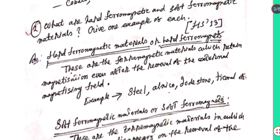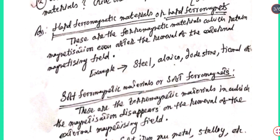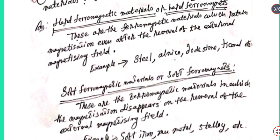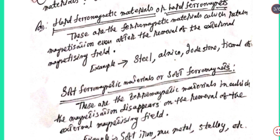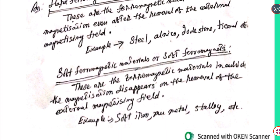The second type is soft ferromagnetic materials or soft ferromagnets. These are ferromagnetic materials in which the magnetization disappears on the removal of the external magnetizing field. Examples include soft iron, mumetal, and stalloys.